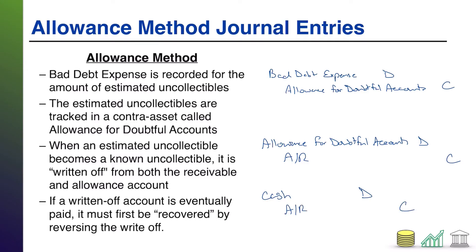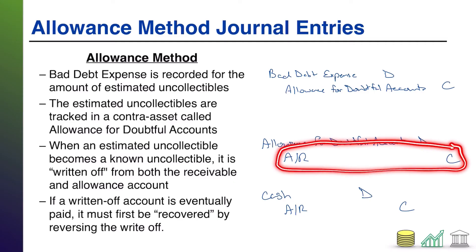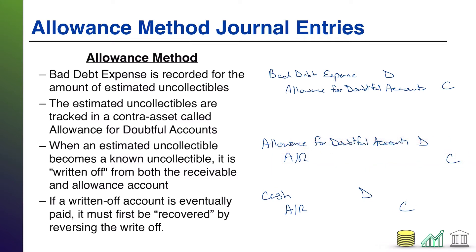The only thing that makes this special is we're talking about collecting cash for AR that already came off the books. That's a bit of a problem, because we can't take it off the books twice — it's not there anymore to take off again.